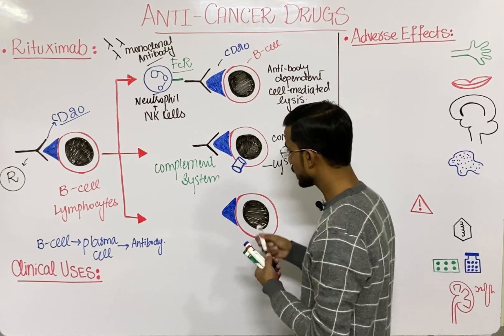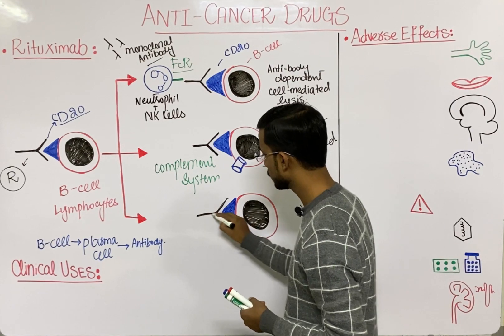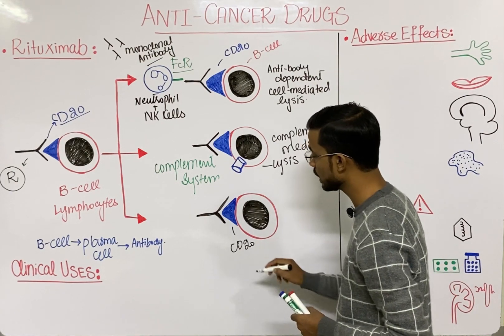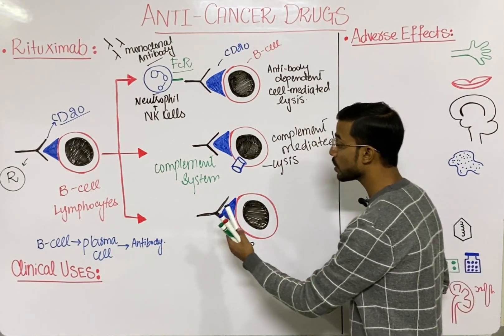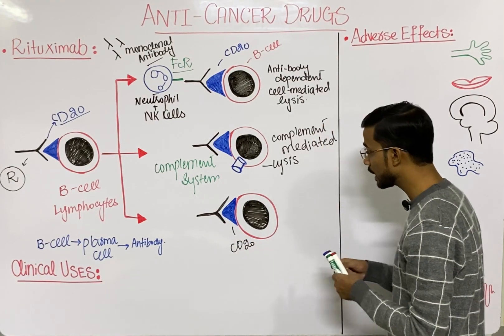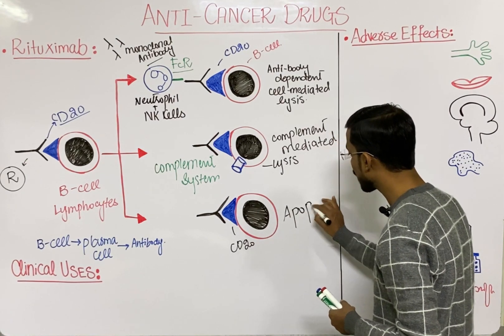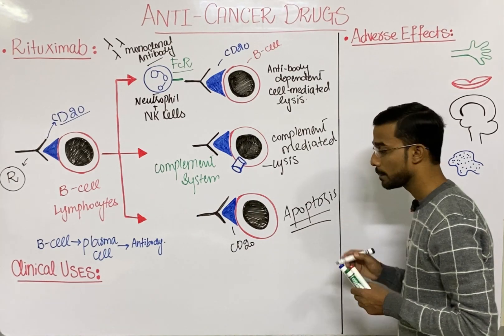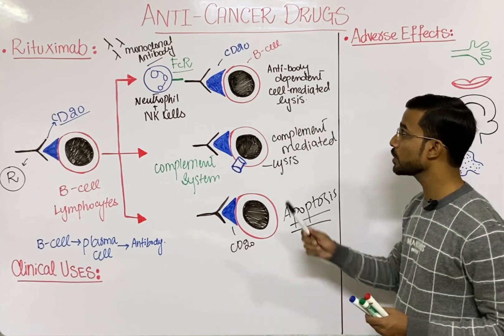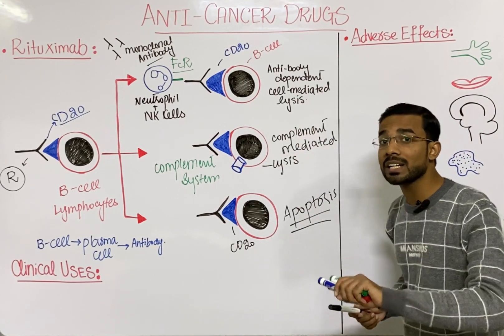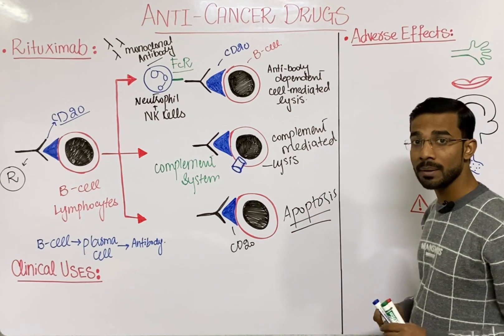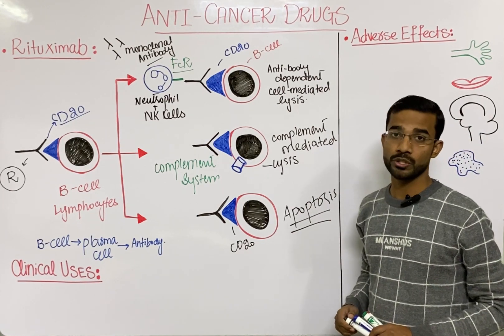In the third case, the monoclonal antibody attaches to the CD20 antigen, and the direct attachment of the antibodies to the CD20 will result in direct death of the cell — that is apoptosis, or programmed cell death. So there are three mechanisms through which B cells can be destroyed by Rituximab: antibody-dependent cell-mediated lysis, complement-mediated lysis, and direct apoptosis.